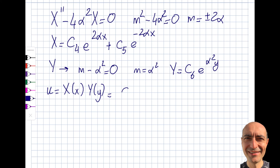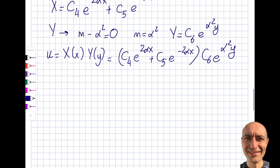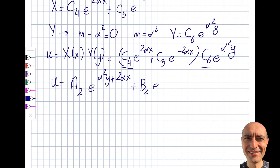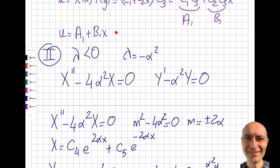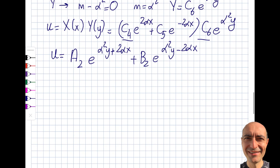The solution u = X·Y for Case 2 is: u = (c₄e^(2αx) + c₅e^(−2αx))·c₆e^(α²y), which simplifies to u = a₂e^(α²y + 2αx) + b₂e^(α²y − 2αx). This solution looks quite different from Case 1 — the separation constant is extremely important.